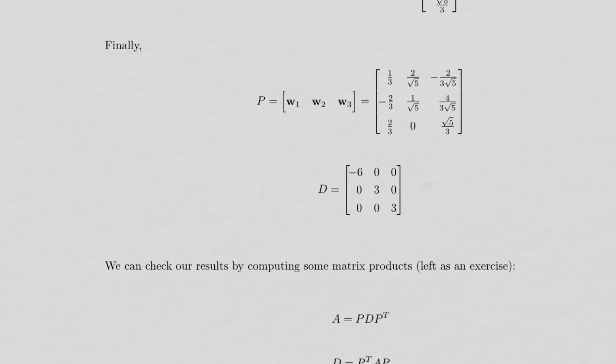And so I've called those Ws here. So we take the Ws, we put them into our matrix P. Here they are. And then D is the diagonal matrix with the corresponding eigenvalues on the main diagonal. So this is an eigenvector corresponding to the eigenvalue minus 6. These two are eigenvectors corresponding to the eigenvalue 3.